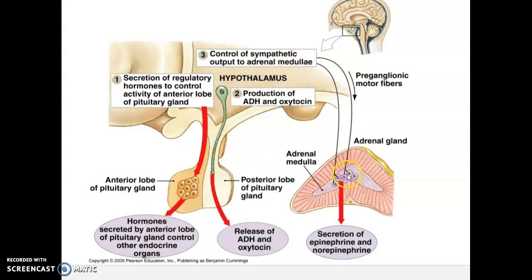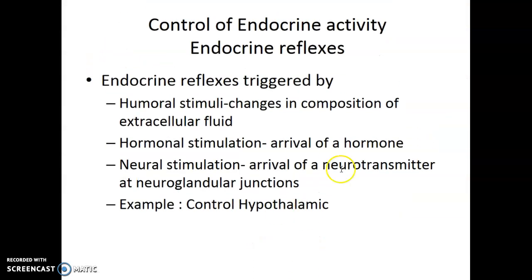Last, and certainly not least, is neural stimulation. A great example is the adrenal medulla releasing epinephrine and norepinephrine (adrenaline) once stimulated by neurons coming directly from the hypothalamus. The sympathetic nervous system releases its own neurotransmitters, which then trigger hormone release to get us through an emergency. So the three examples of how hormones are signaled to be released are: humoral (composition of extracellular fluid), hormonal (arrival of one hormone triggering release of another), and neural stimulation (nerve cells directly causing hormone release).